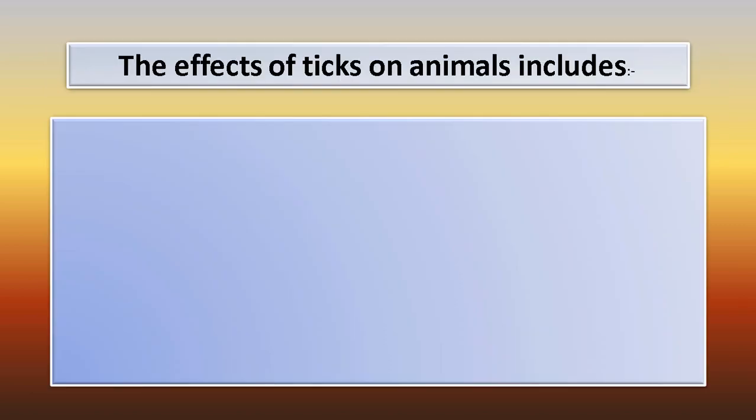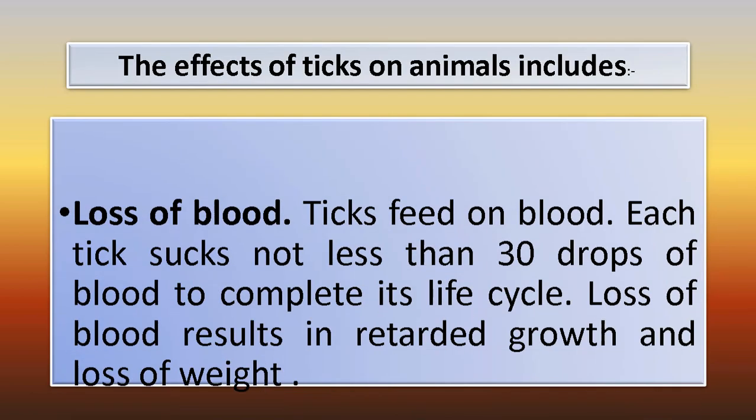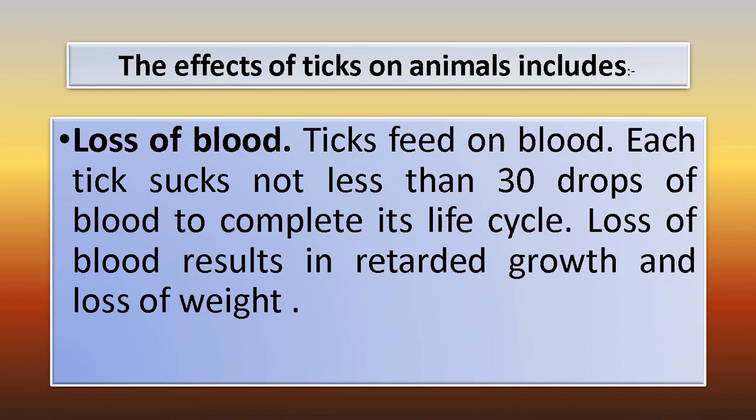The effects of ticks on animals include loss of blood. Ticks feed on blood, and each tick sucks not less than 30 drops of blood to complete its life cycle. Loss of blood results in retarded growth and loss of weight.